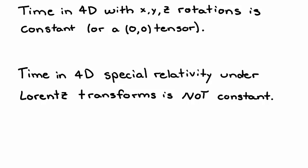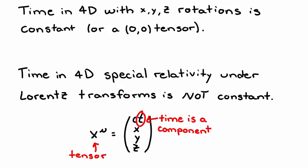But in four-dimensional special relativity, we use Lorentz transformations, which mix space and time. Time now can change under transformations. So time is no longer a constant, and thus no longer a tensor. In this space, time is a component of a 4 vector, and that 4 vector is a tensor.